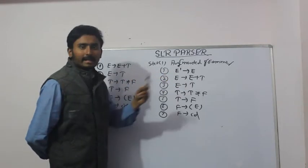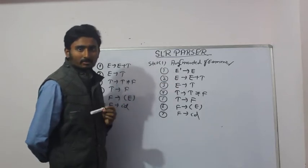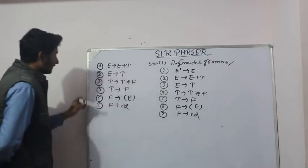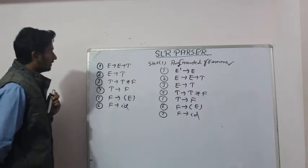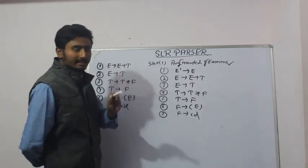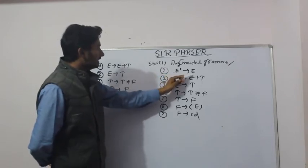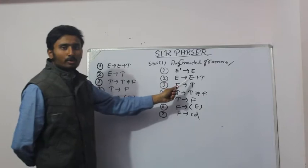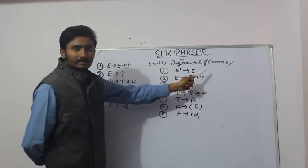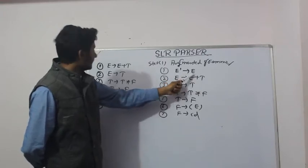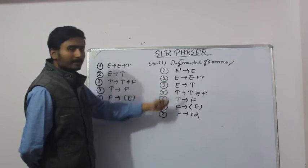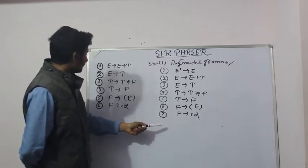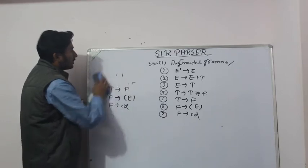Step one: we need to augment the grammar. Augmentation simply means we are going to add one extra production to the given set of productions. In our grammar, we are going to add one extra production of the form E'→E, where E is the start symbol. After this step, we have seven productions in total.